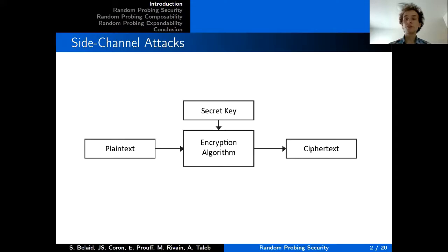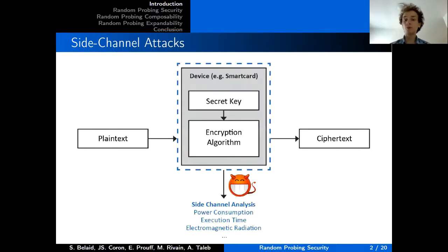Most cryptographic algorithms are usually secure when an adversary only has access to the inputs and outputs of this algorithm. However, when implemented on hardware, these algorithms become vulnerable to so-called side-channel attacks, where an adversary can also observe the physical leakage of the device, such as power consumption or execution time, and exploit its dependence with the secret values of the algorithm.